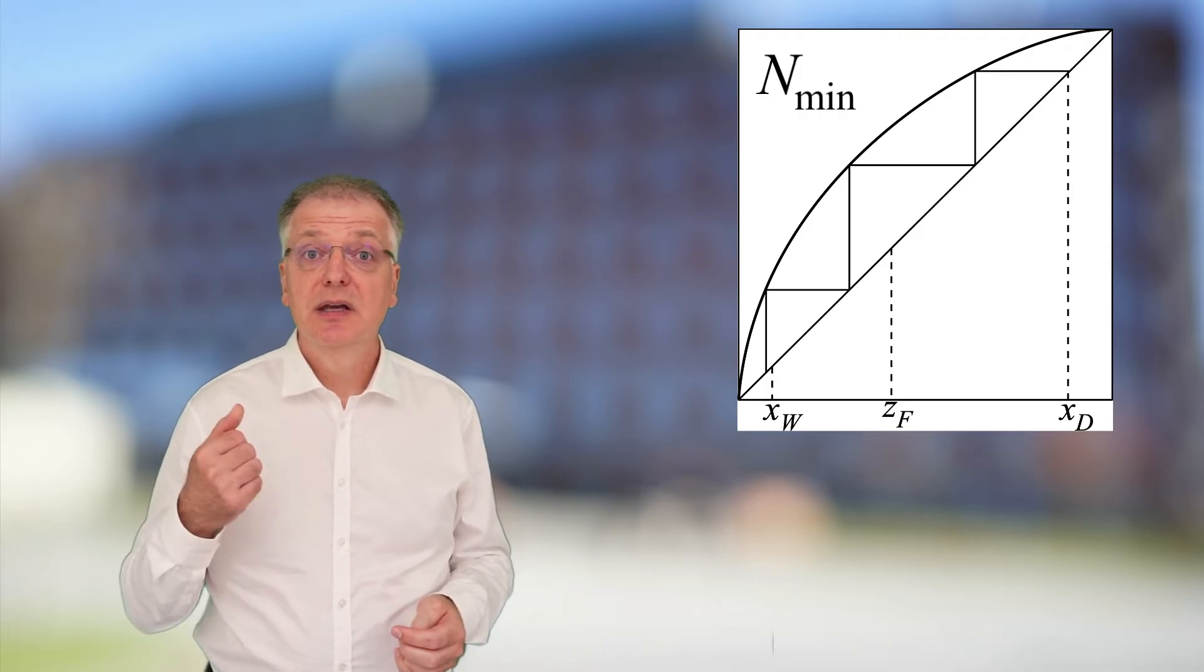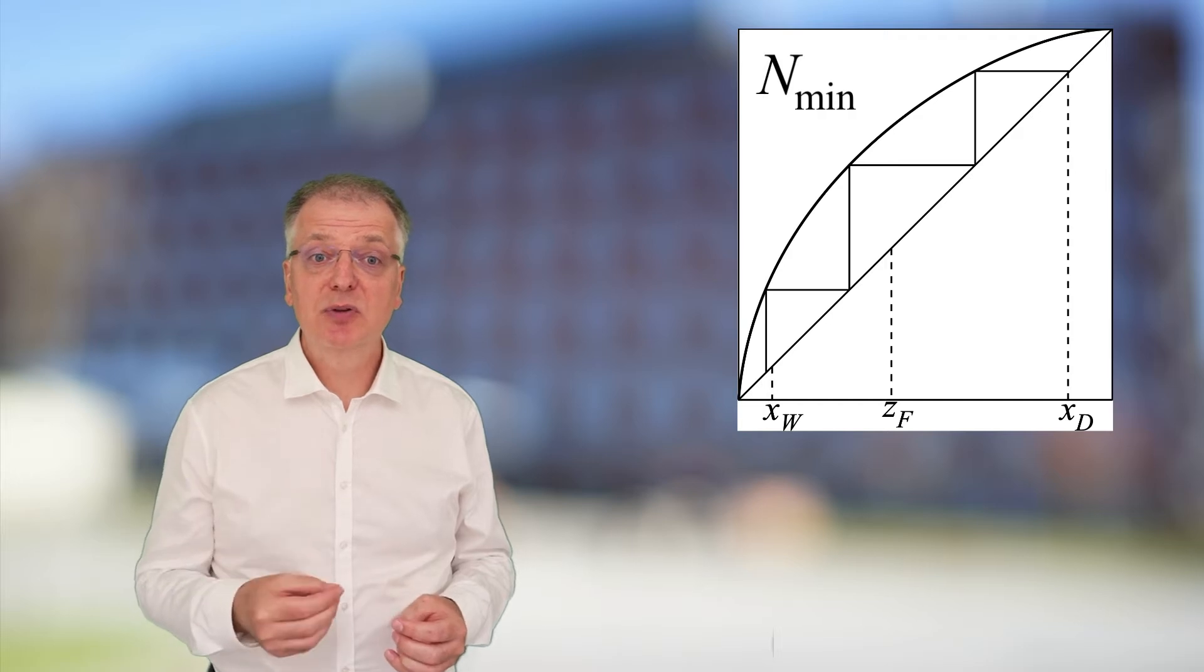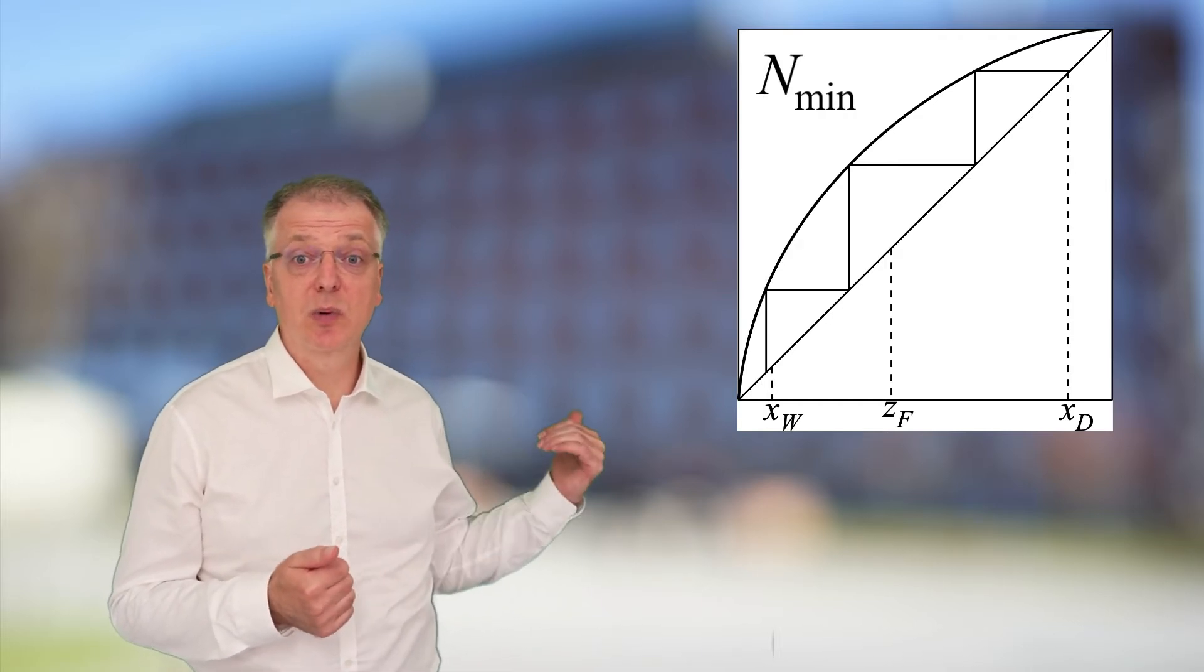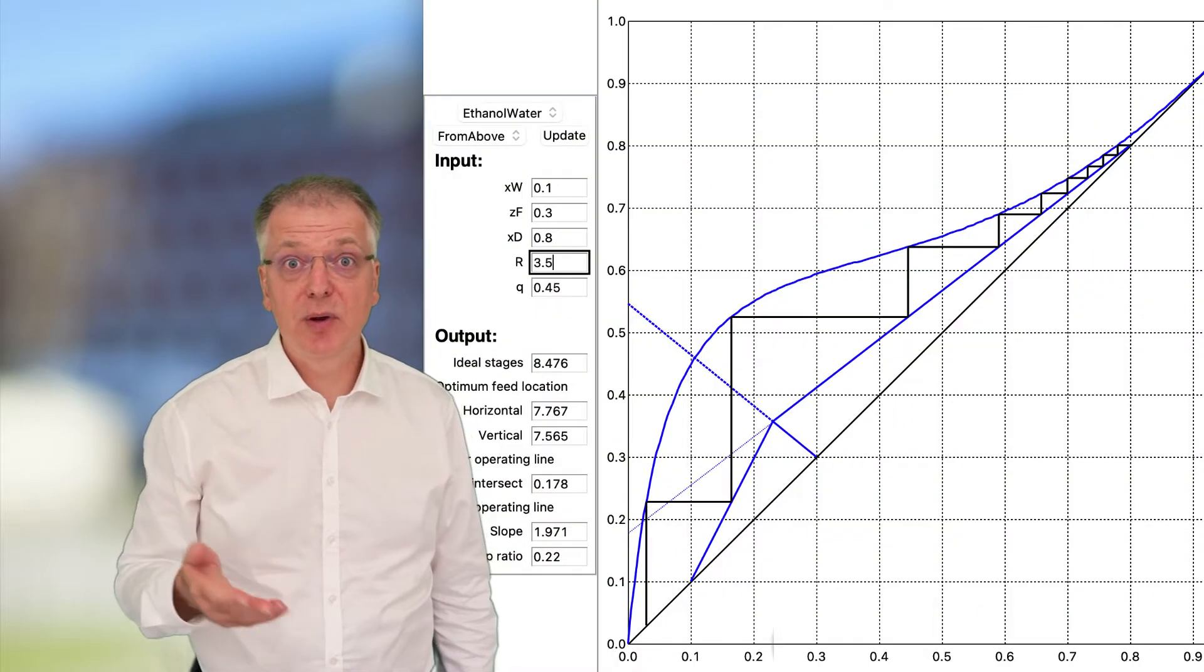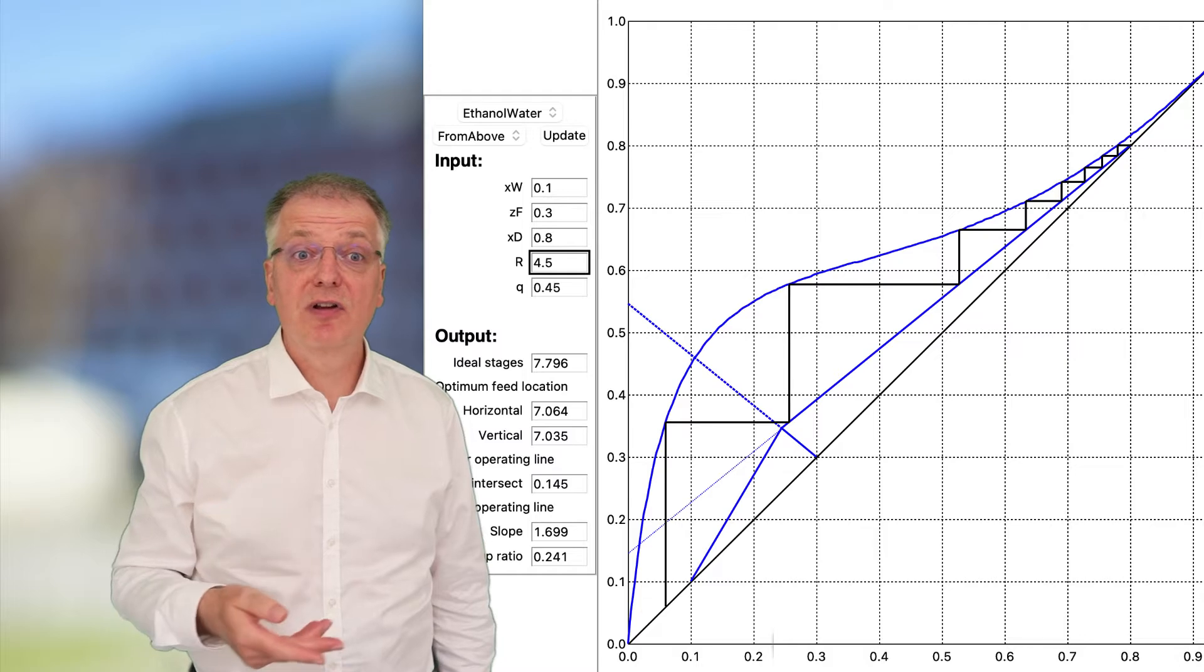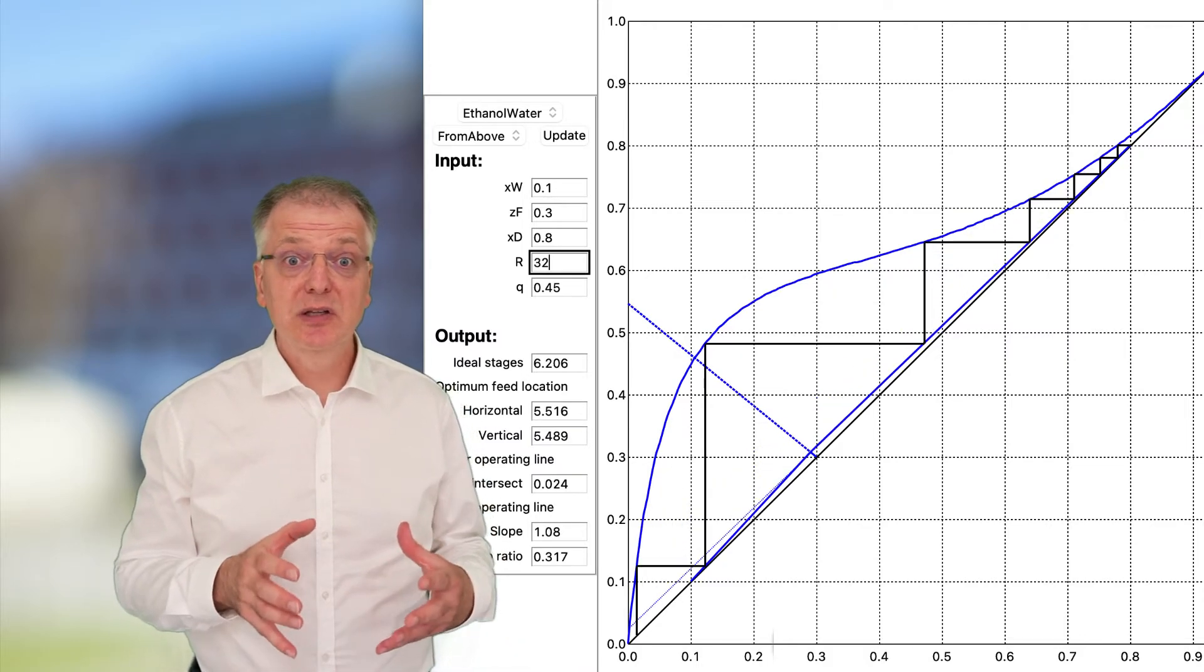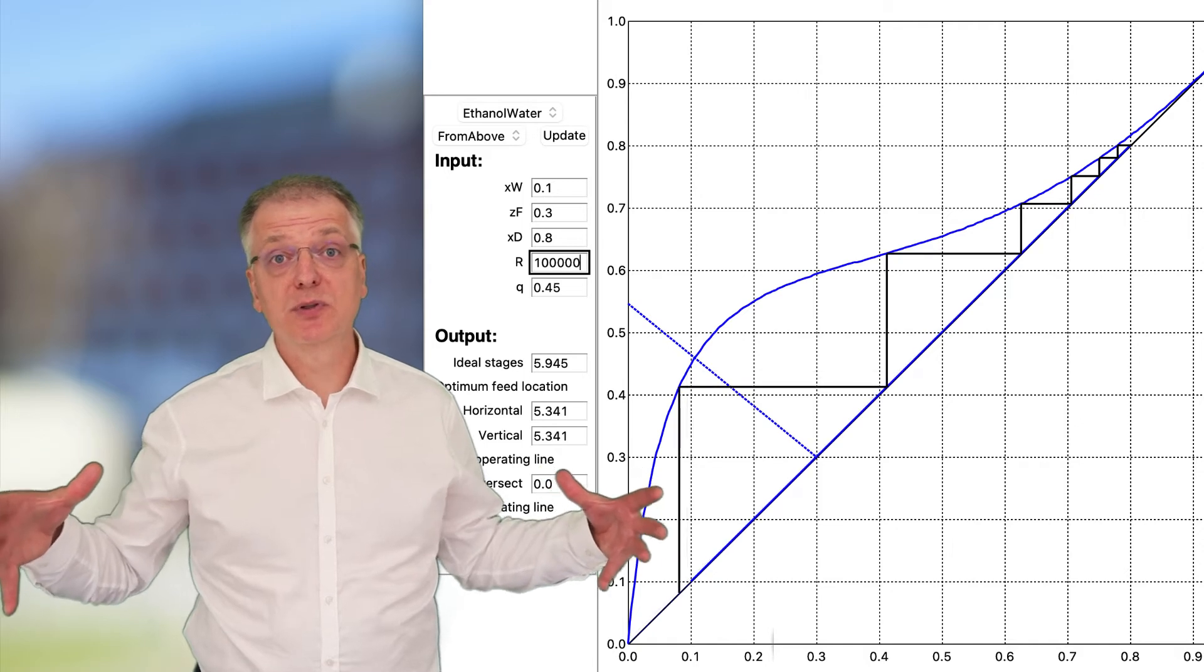What N-min tells you is that you will never be able to carry out the distillation with a distillation column with fewer equilibrium trays than N-min. Calculating N-min is equivalent to increasing the reflux ratio to infinity, which also means we will need to increase the diameter of the column to infinity.